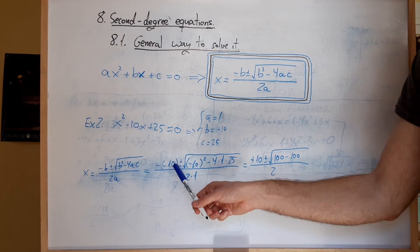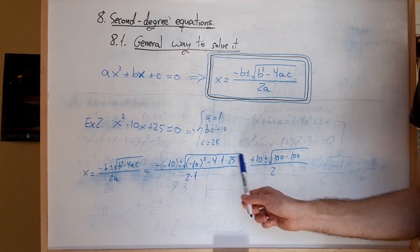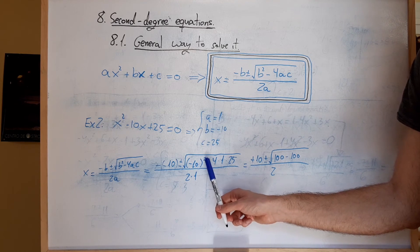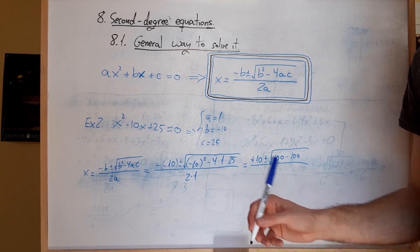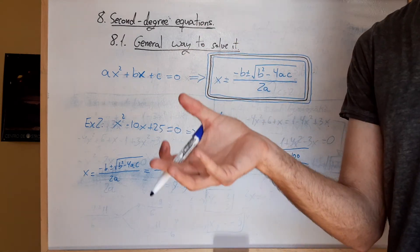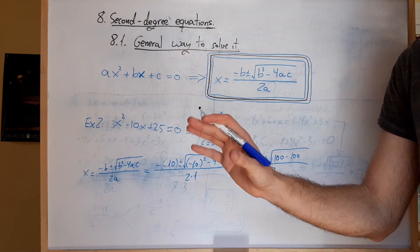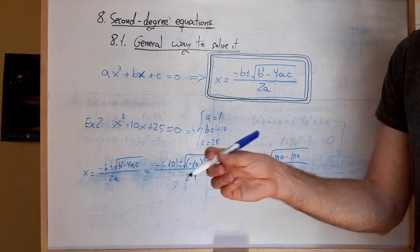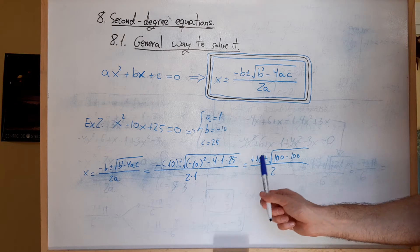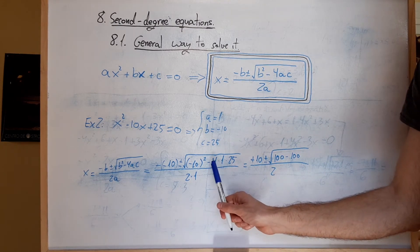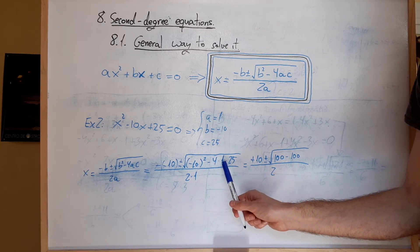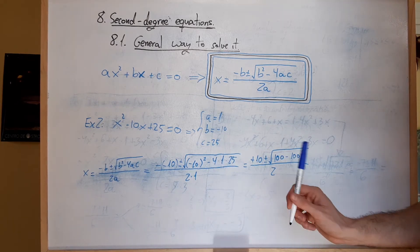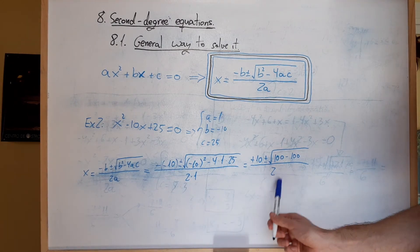Pues empezamos a resolver. Menos por menos son más, más 10, más-menos raíz cuadrada. Menos 10 todo al cuadrado — como la base es negativa y el exponente es par, entonces nos va a salir resultado positivo. Así que aquí siempre sale positivo. Menos 10 al cuadrado es 100. Y menos 4 por 1 son 4, y 4 por 25 son 100, pues menos 100. 2 por 1 son 2.